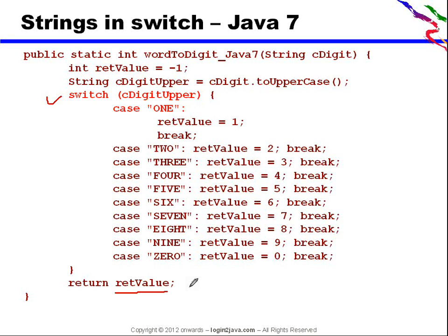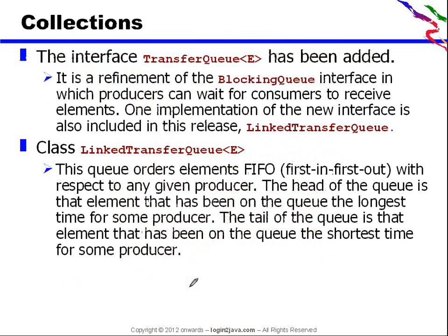Now, Collections. The interface TransferQueue has been added. It is basically a refinement of the BlockingQueue interface, in which a producer can wait for the consumer type.